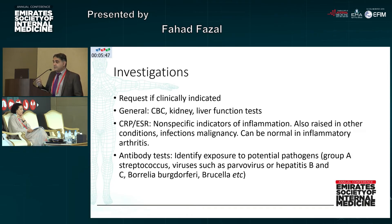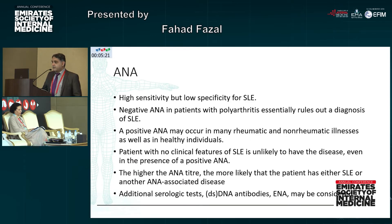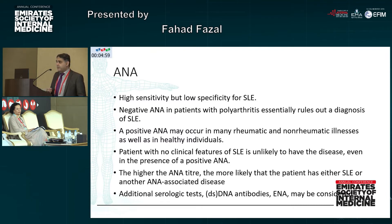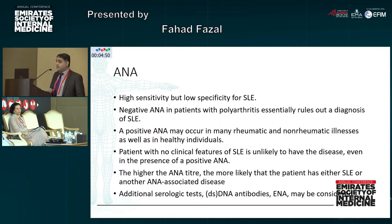Regarding investigations, the general tests are routine CBC, kidney and liver function tests, ESR, and CRP. They are nonspecific markers of inflammation but are also raised in other conditions such as infections and malignancy. Antibody tests identify different pathogens such as Group A streptococcus, parvovirus, hepatitis B and C, Borrelia, and Brucella. For autoimmune diseases, ANA is commonly requested — it has high sensitivity but low specificity for lupus. A negative ANA essentially rules out SLE. A positive ANA may occur in many rheumatic and non-rheumatic illnesses and can be a normal finding in a healthy individual.